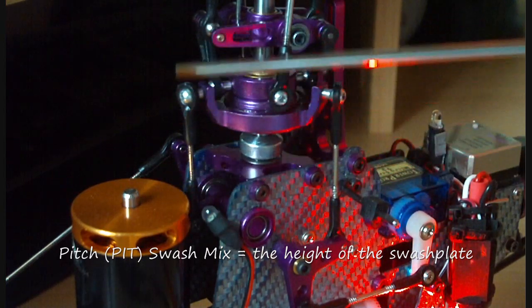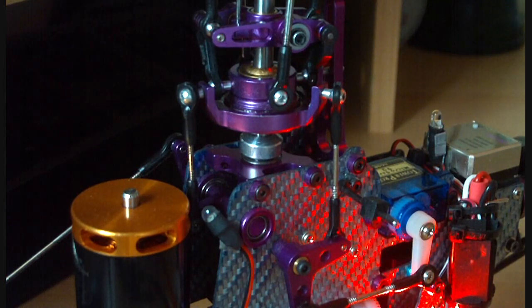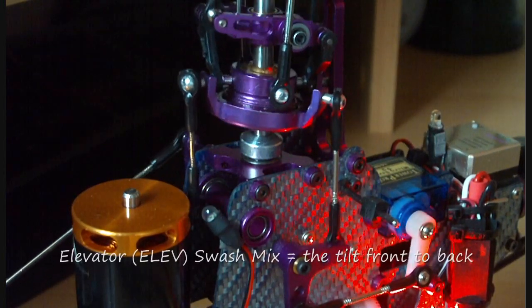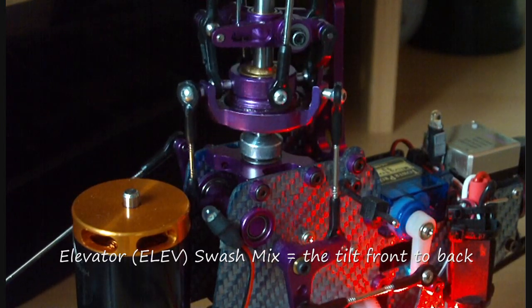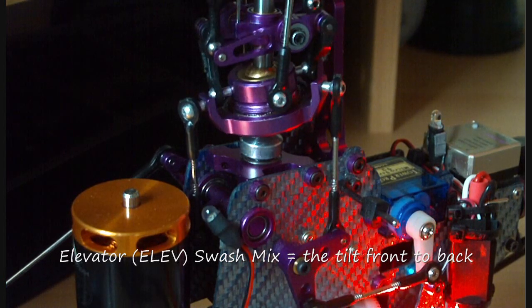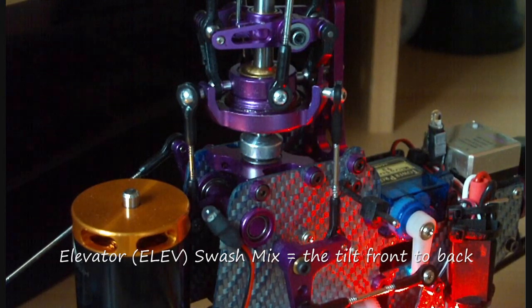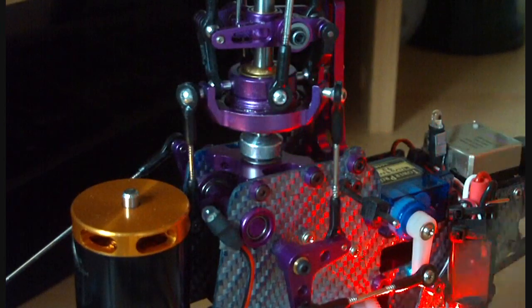So that's the Pitch Mix. Pitch Mix controls the height of the Swash and the way it moves up and down in relation to the throttle. The other two Pitch Mixes that you're finding inside your radio are Aileron and Elevator. Elevator controls how the Swashplate moves from front to back. If you find that the Swashplate isn't moving in the right direction—so ideally as you push your stick forward or up towards the top of the radio, the Swashplate should dip at the front—if it doesn't do that, then again change the polarity of the Elevator Mix, and that will then change the way that the Swashplate moves.